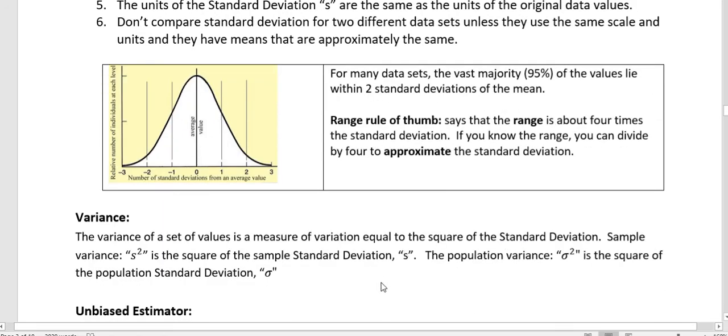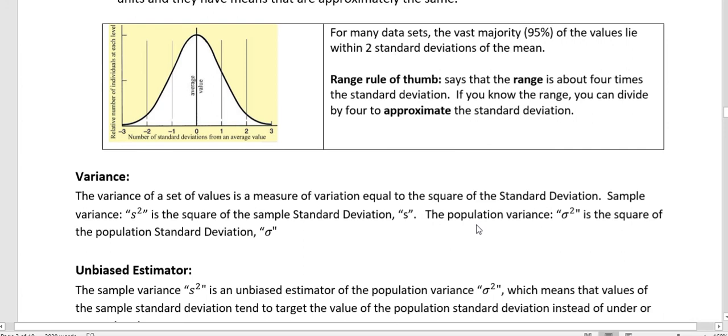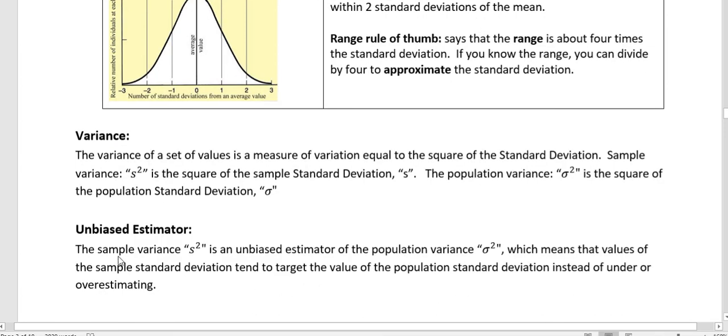And finally variance is just the square of the standard deviation. So if you know your standard deviation you take it to the second power you get your variance. If you know the variance you take the square root of that and you get the standard deviation. The symbol for sample variance is s squared and for the standard deviation for a population was sigma. So we take sigma squared to get the variance for the population. And the sample variance s squared is an unbiased estimator of the population variance which means that values of the sample standard deviation tend to target the value of the population standard deviation instead of under or overestimating it. So we say that it's a nice unbiased estimator.